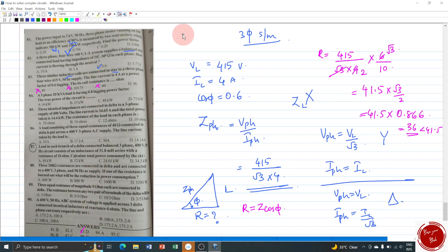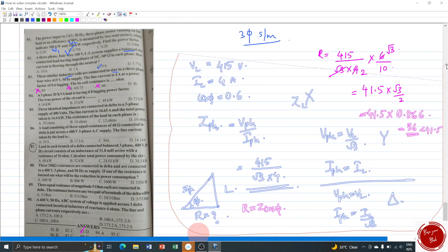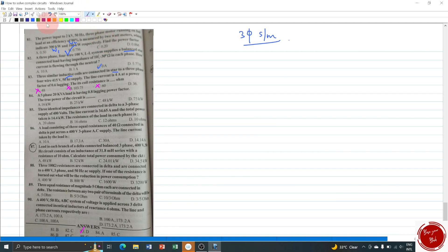Moving on to question number 84. The second last question for the video. A 3 phase 20 kVA load is having 0.8 lagging power factor, the true power of the circuit. True power means root 3 VL IL cos phi. This is in kVA unit and when you multiply the power factor also, the complete becomes the active power which is in kilowatts. kVA rating is given as 20 kVA and cos phi value is given as 0.8. So what is that? 20 into 0.8 is 16. The unit gets changed to kilowatts. So option A is the right answer. That's a simple one.